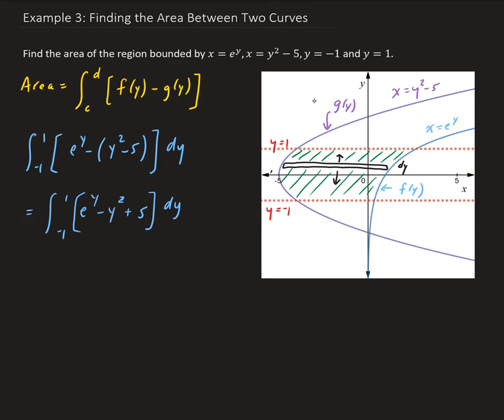So now we can go ahead and take the integral. We're going to have the integral of e to the y is just e to the y, the integral of y squared is going to be minus 1 third y cubed and then plus 5y. And we want to evaluate this from minus 1 to 1.